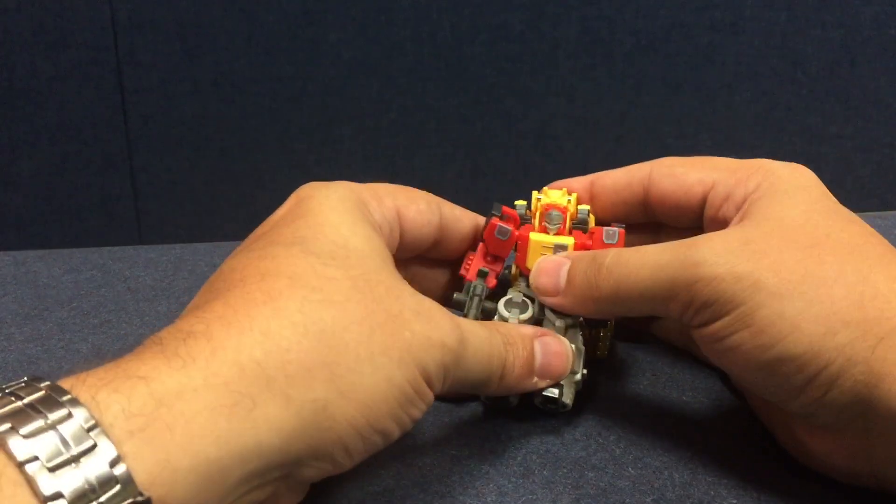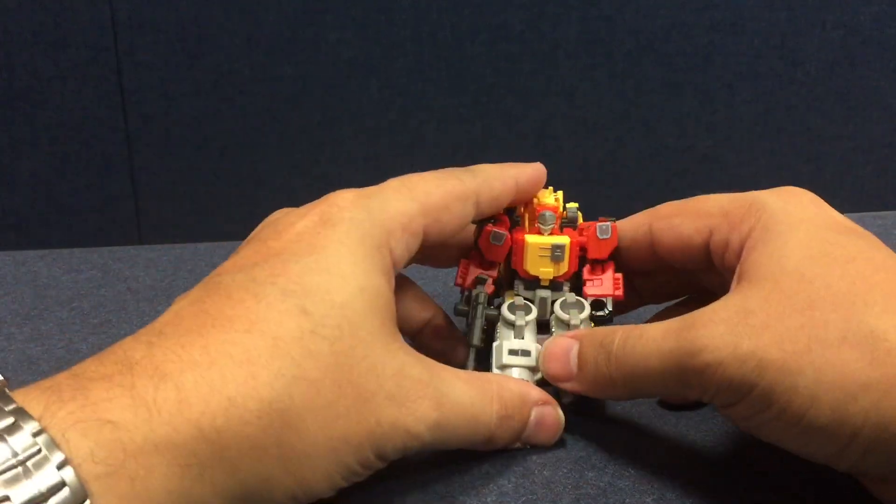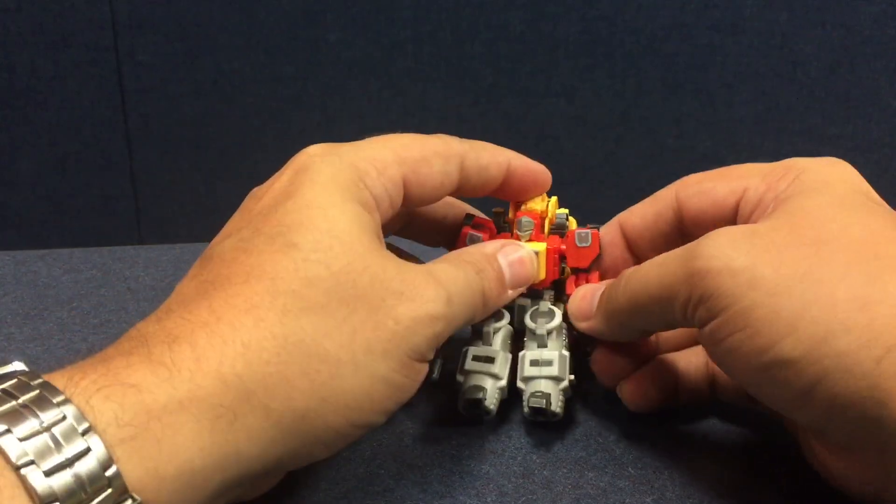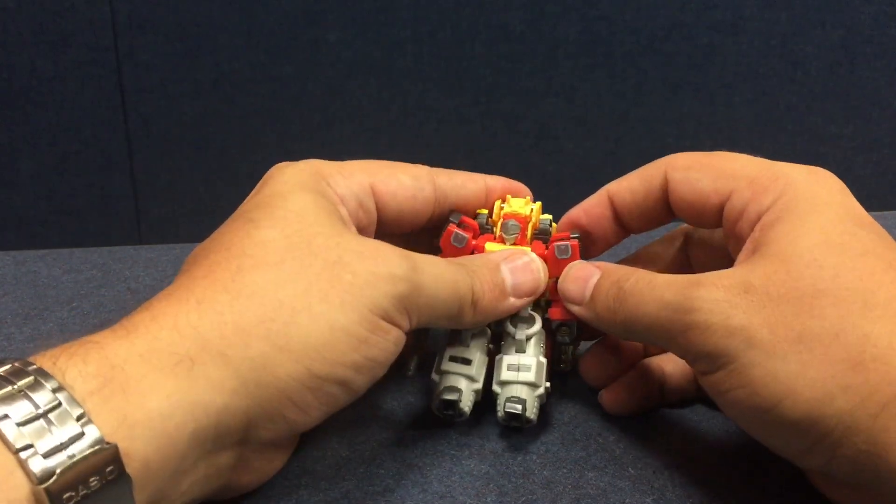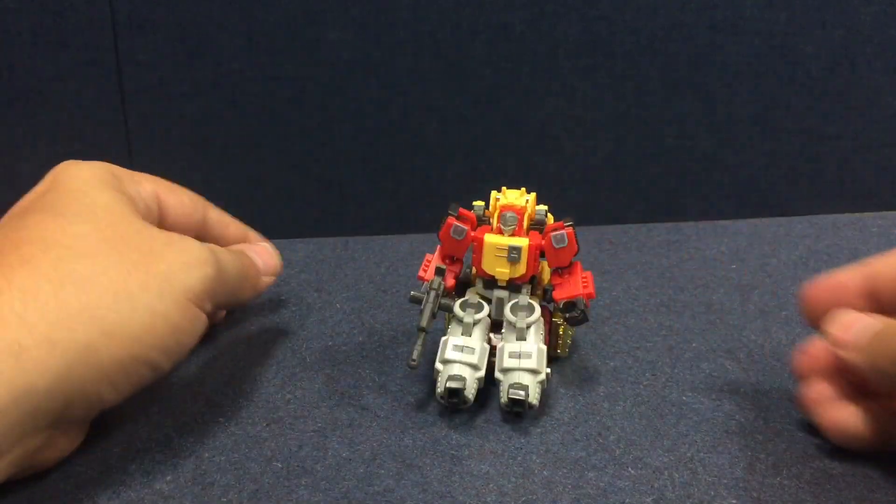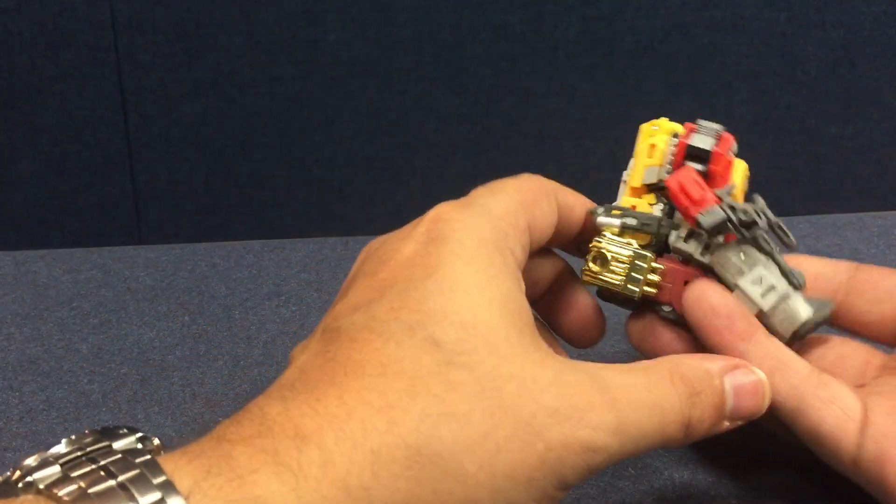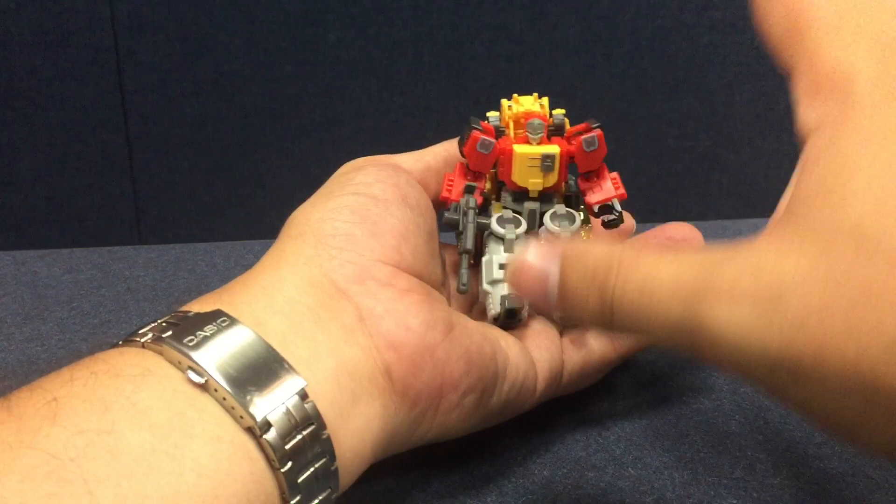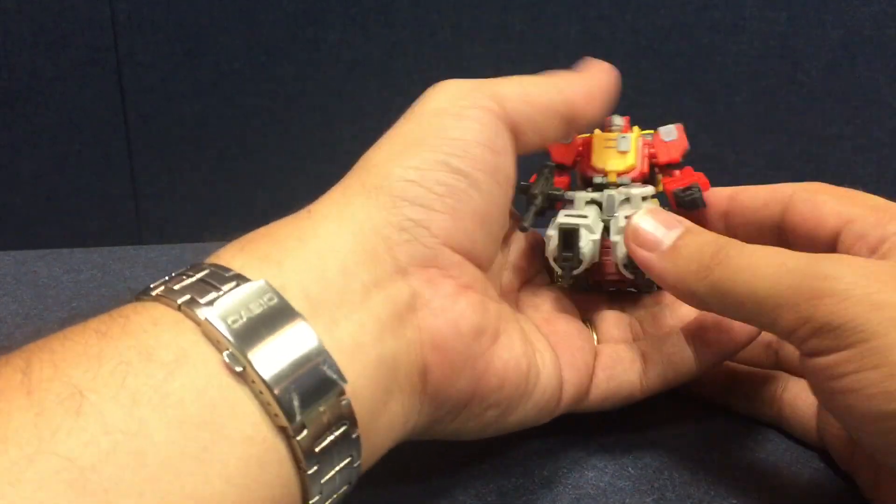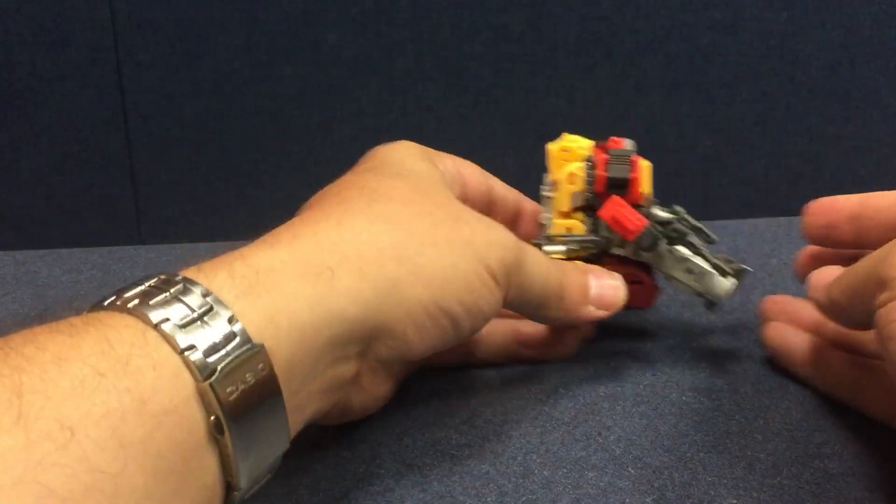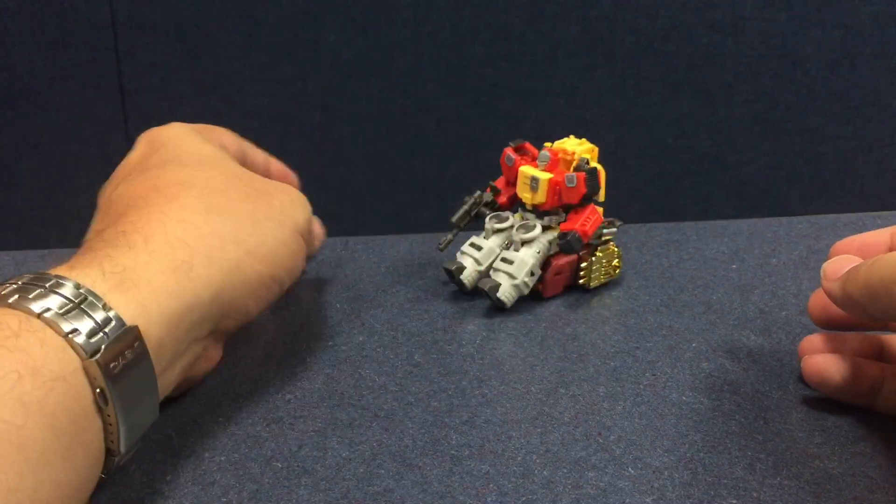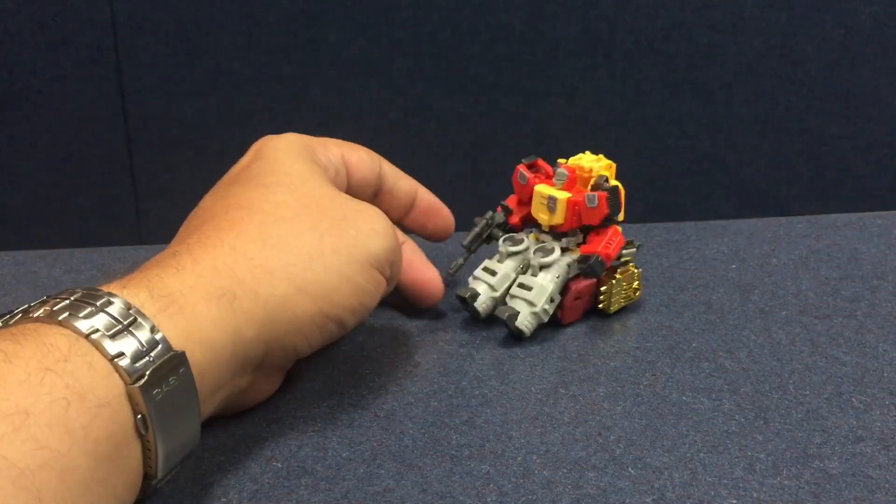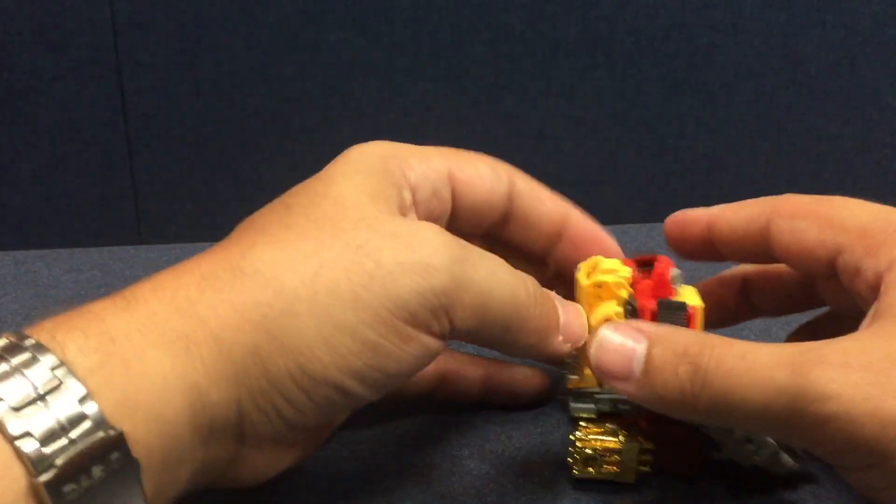He can actually fit, I didn't bring in Generations Metroplex because hauling him around just to do a review is a little bit of a pain in the butt. He's huge. But this little base, this little control chair, can actually fit in that opening in Metroplex's chest, that little bay. So you can have him sitting in there, controlling things. Blaster comes with his own little throne made up of his minions. So if that's not service, I don't know what is.